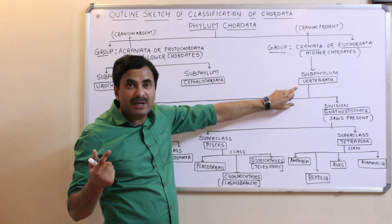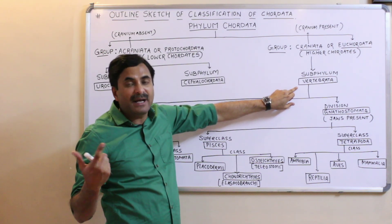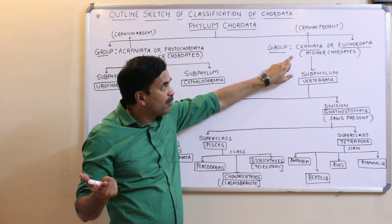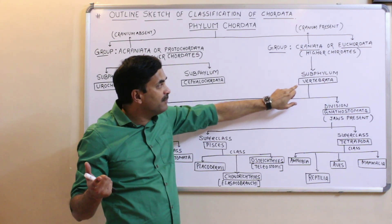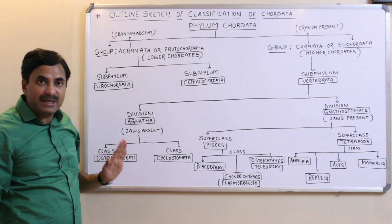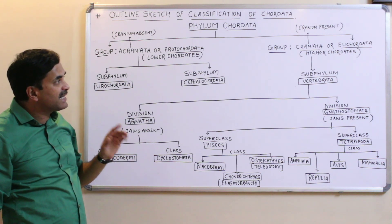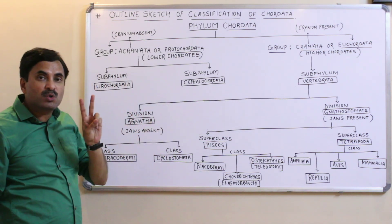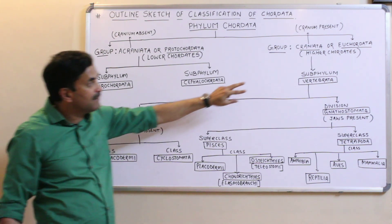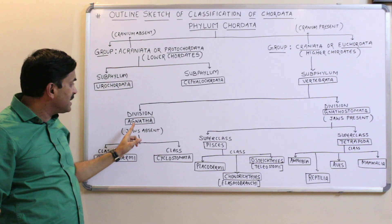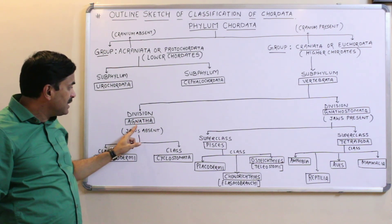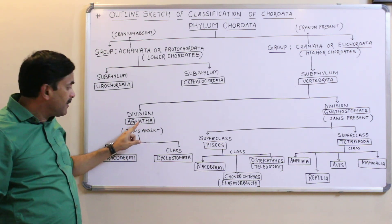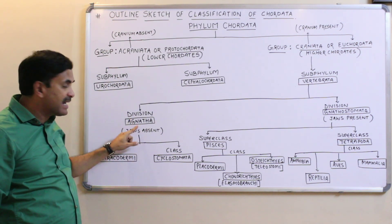Vertebrata members have a vertebral column, and that is why they are called vertebrates. The subphylum Vertebrata is classified into two major divisions: one division is called Agnatha — 'a' means absent and 'gnatha' means jaws, so jaws are absent in Agnatha — and the other division is Gnathostomata.